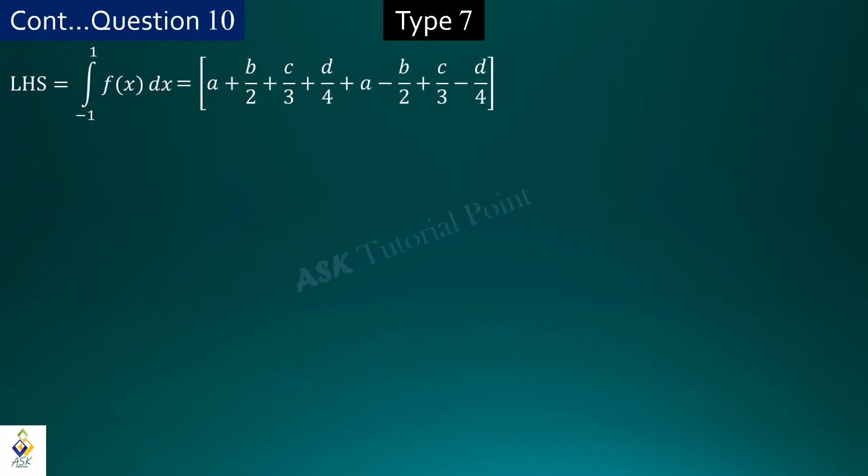After integrating, we place upper limit and lower limit and simplify to get 2 times a plus c by 3. Now we can simplify the right hand side expression.